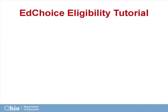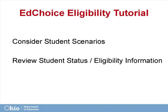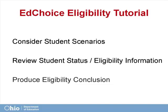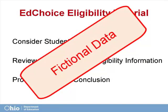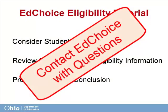In our video examples, we will present various student situations, then we will review the EdChoice eligibility charts and work through them to determine potential eligibility options. Please be aware that this tutorial will use fictional student data, but it will demonstrate actual student situations and how to resolve them. If you have any questions about student eligibility, please contact the EdChoice office.